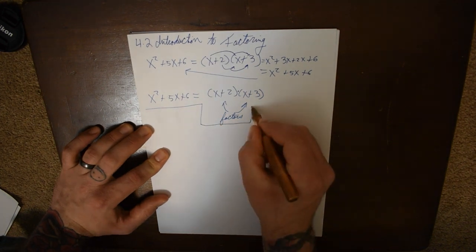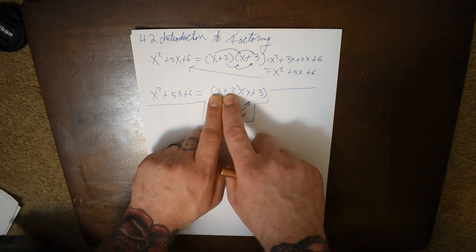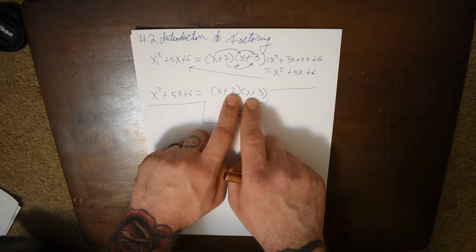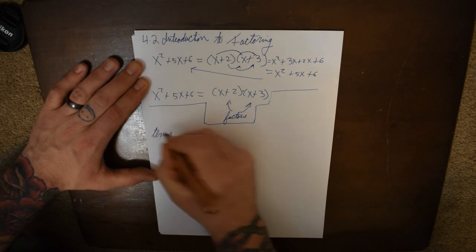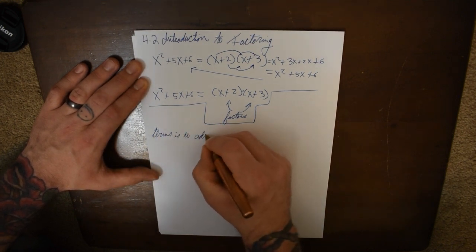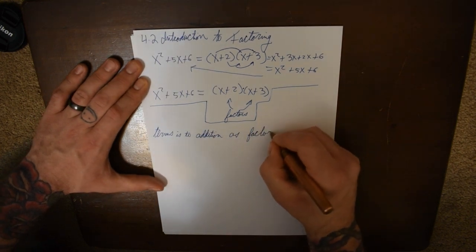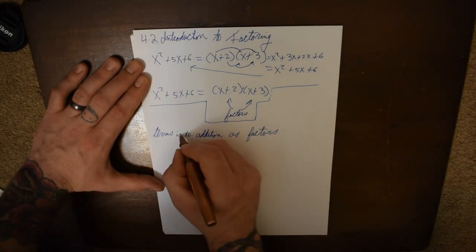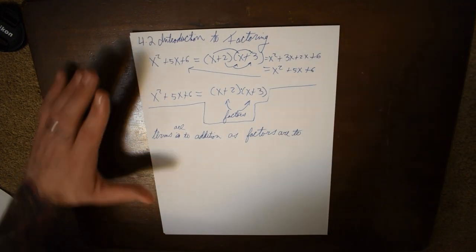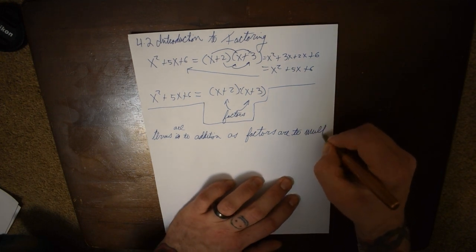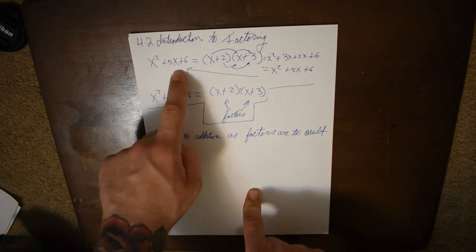Just like how we had terms being mathematical expressions separated by addition, factors are mathematical expressions separated by multiplication. So terms are to addition as factors are to multiplication. By factoring polynomials, we want to come up with smaller polynomials that multiply together to equal the big polynomial.